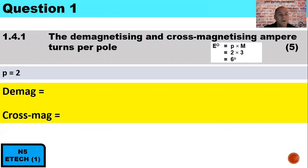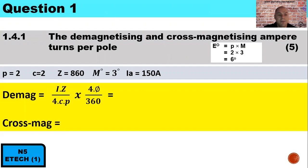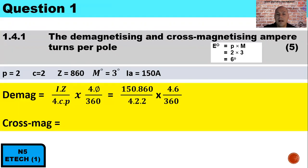This is a four-pole machine, therefore two pole pairs. It is wave wound, therefore C equals 2. Z, the total number of armature conductors, is 860. The mechanical degrees is 3 and the armature current is 150 amps. To determine the demagnetizing ampere turns per pole, we use: current multiplied by Z, over 4 × C × P, multiplied by 4 × theta over 360. That is 150 × 860 ÷ (4 × 2 × 2), multiplied by (4 × 6 ÷ 360). Therefore, the demagnetizing ampere turns per pole is 537.5.